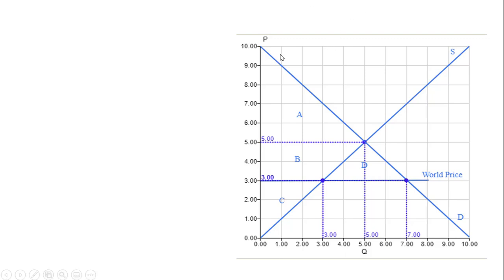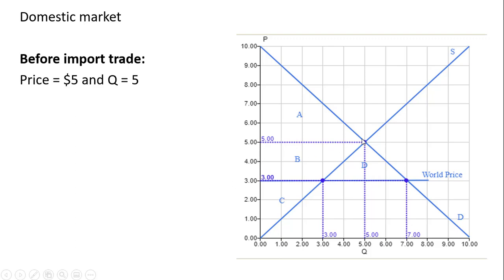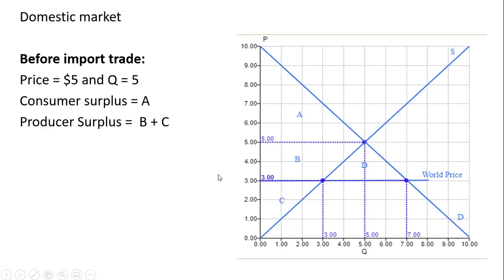Here is the domestic market. We have a demand for this good in the domestic market and the supply. We're going to first look at the situation before trade. The equilibrium price is $5 a unit and the equilibrium quantity is 5 units. Consumer surplus equals area A — it is the difference between the height of the demand curve and the market price. Producer surplus is the difference between the market price of $5 and the supply curve, given by areas B and C. Total surplus is consumer surplus plus producer surplus — that's area A, B, and C.